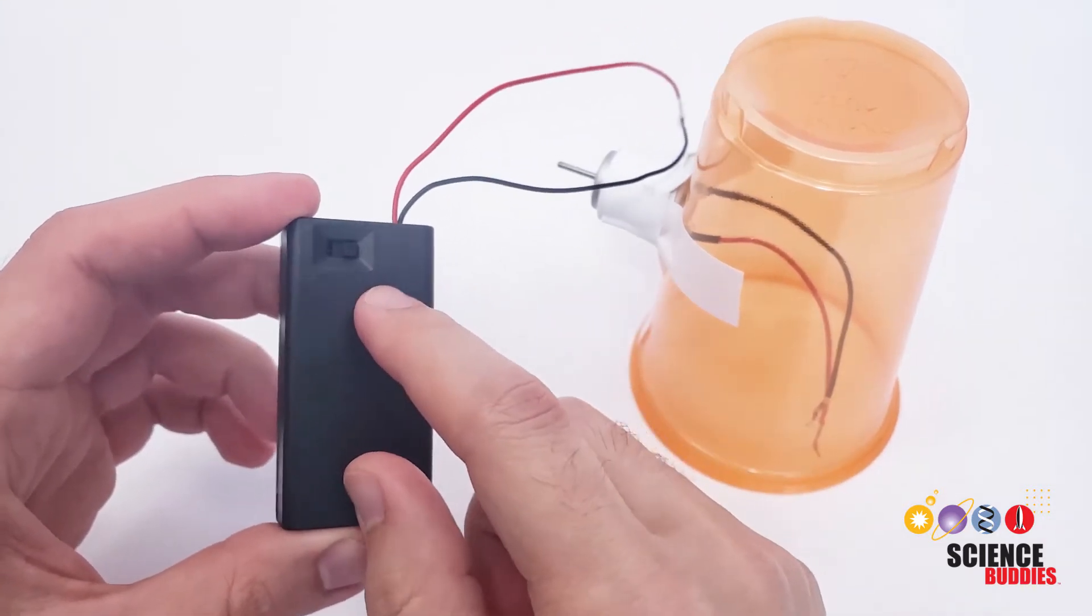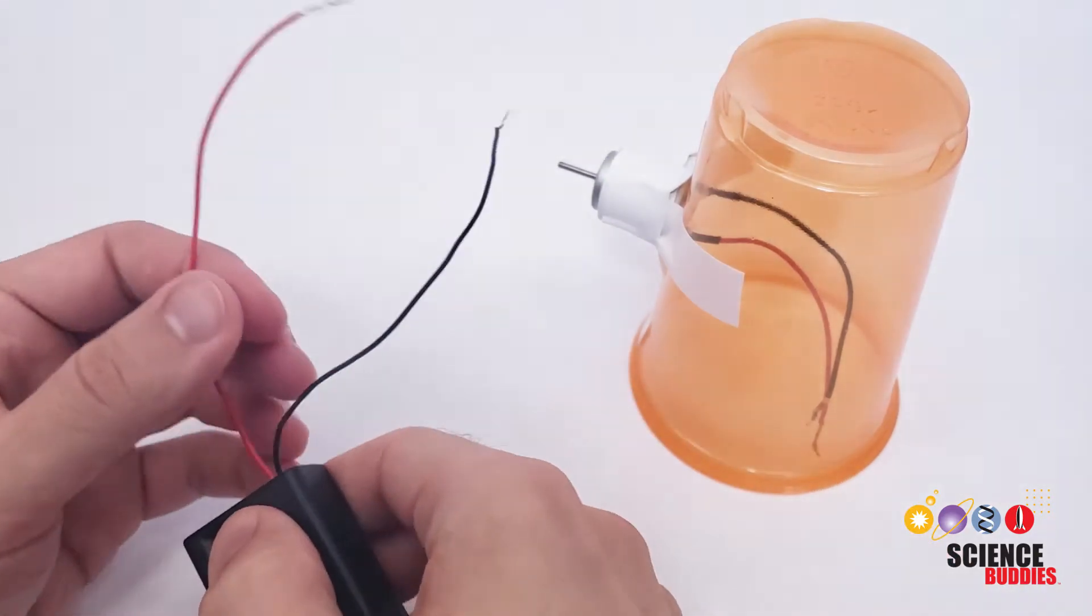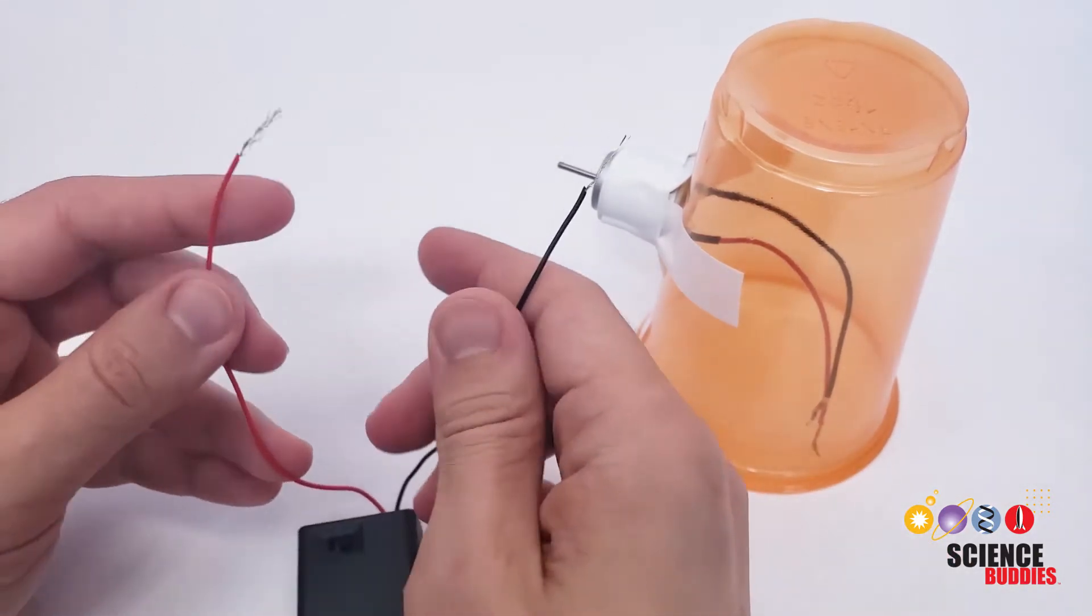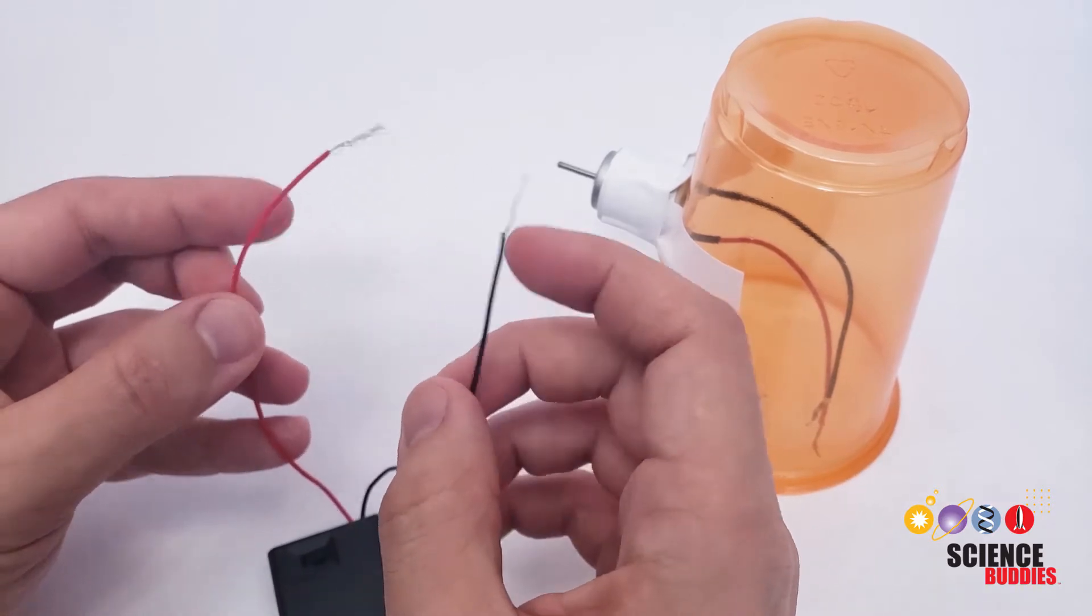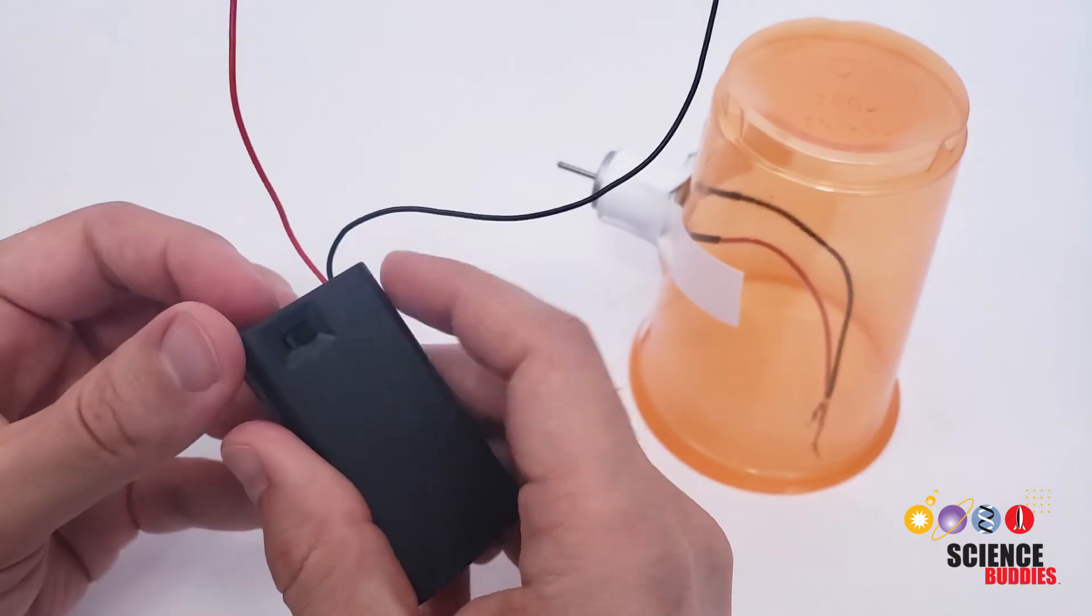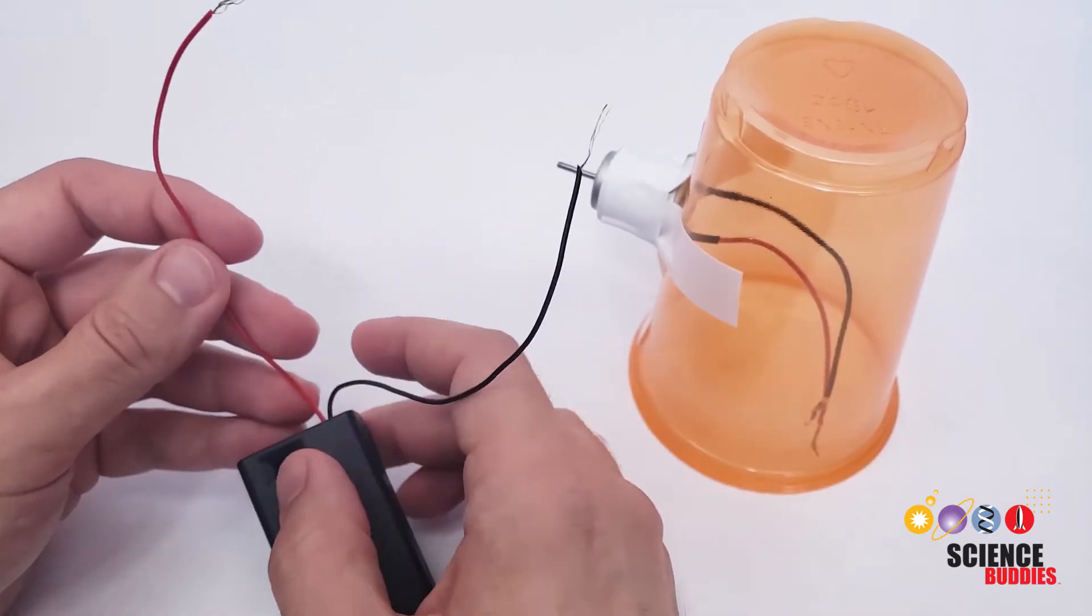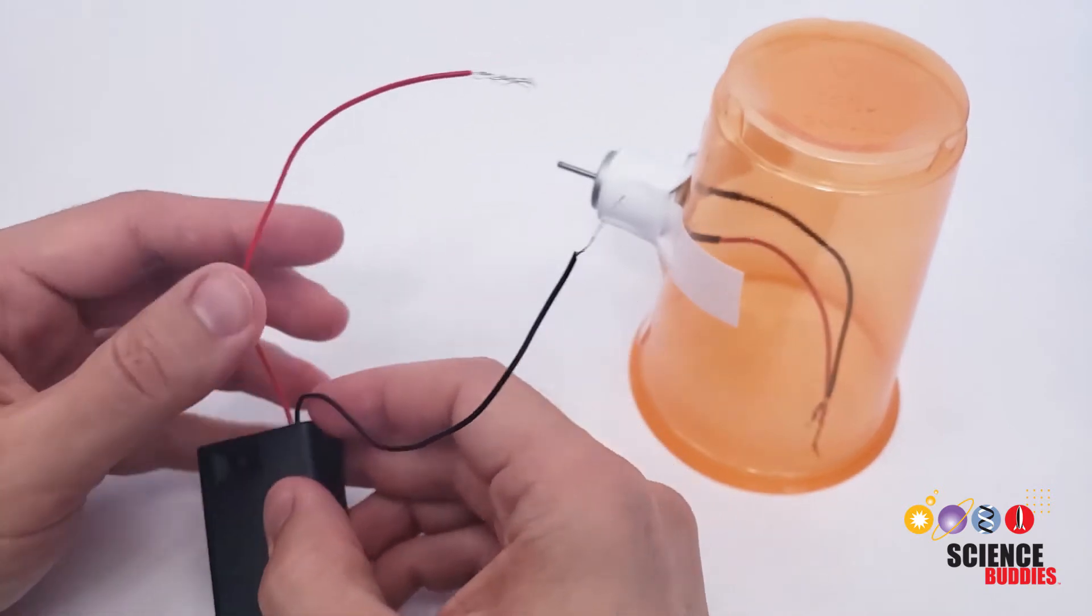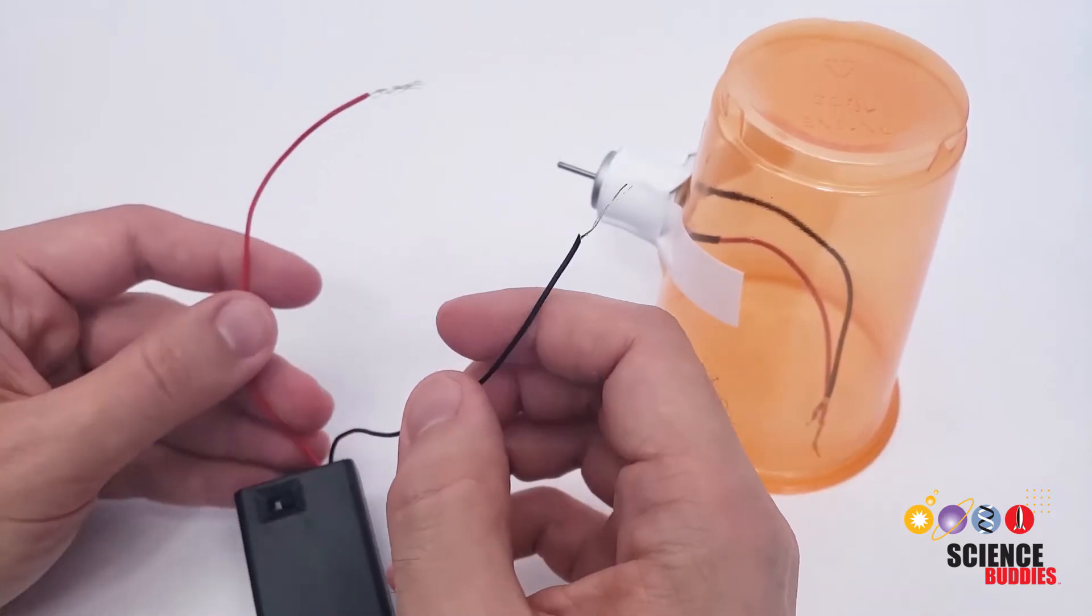Next, make sure the switch on your battery pack is in the off position so the motor doesn't start spinning instantly when you connect these. You also want to make sure you don't get short circuits. You don't want to let these loose ends of the wires bump into each other. Having a battery pack in the off position is sort of a safety against that, but general good habit, you don't want loose wires bumping into each other because if your battery pack is on and those wires touch each other, that will create a short circuit and can make the batteries get very hot.